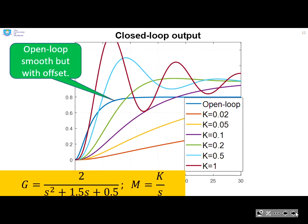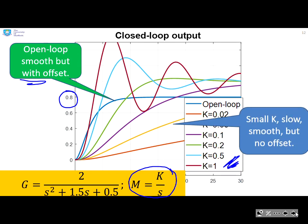So I've generated a number of closed-loop responses for some different compensators k. So you can see my m is written as k over s. And my system is a simple quadratic. Now, the open loop is given here. And the open loop in this case is not too bad, but it settles at 0.8. So there's a 20% offset there, and that's notwithstanding other types of uncertainty. What happens if I use a small k in the closed-loop? Well, you can see the responses are smooth. They do settle at 1 eventually. But they are very, very slow.